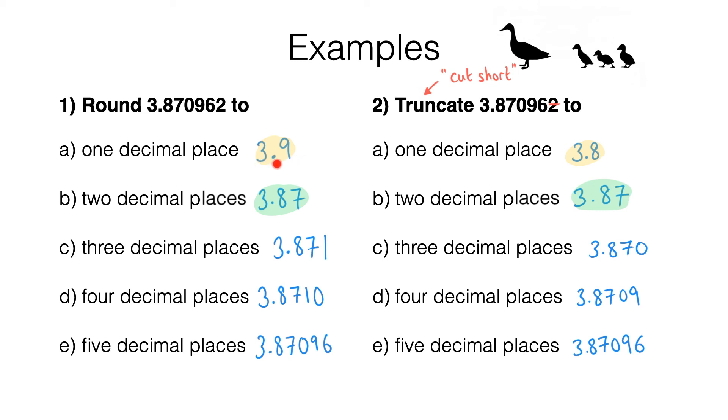We can see why rounding and truncating to one decimal place give different answers by looking at the digit in the next place value. In the second decimal place—the hundredths column—we have a seven. Because that's greater than or equal to five, we normally round the previous digit up.